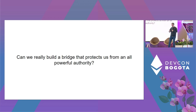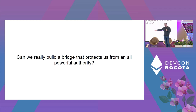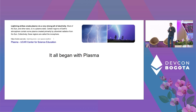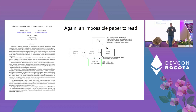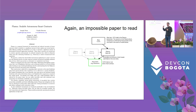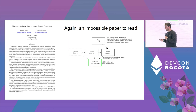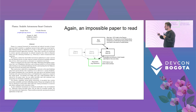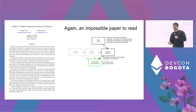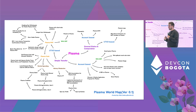The better question is: can we build a bridge that protects us from an all-powerful adversary — so even if the entire system goes offline, I can still get my funds out? This was the goal of Plasma, which came out in 2017. The idea in the paper was amazing: it tried to solve that availability and liveness problem, so even if the entire system goes offline, you can still get your funds out.